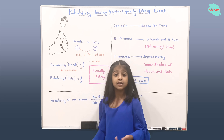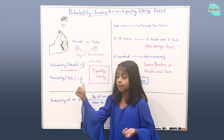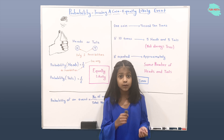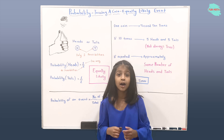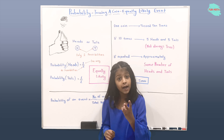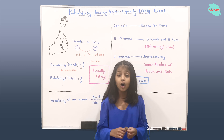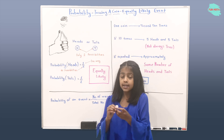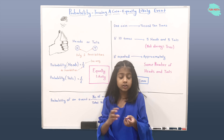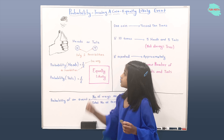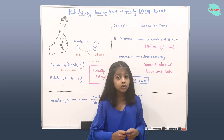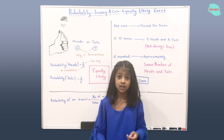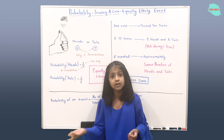Here you can see someone tossing a coin. I have a coin here. You know that a coin has two sides. On one side we have heads and on the other side we have tails. So there are only two possibilities: to get heads and tails.